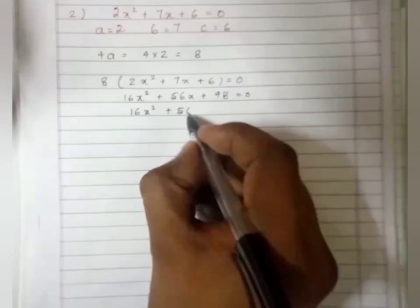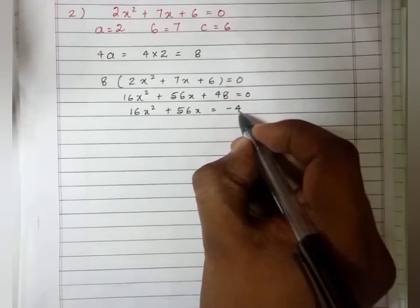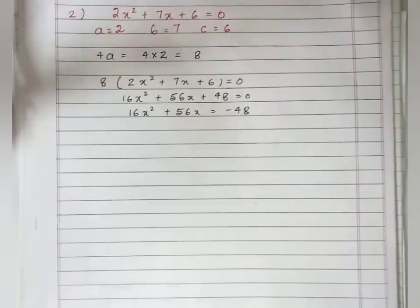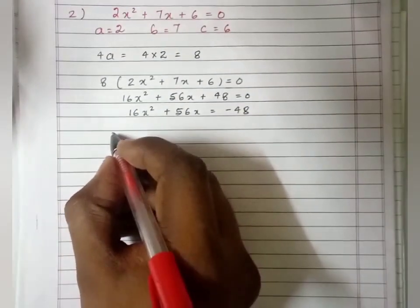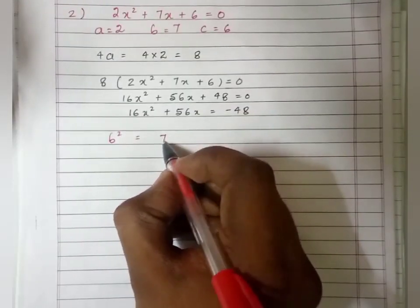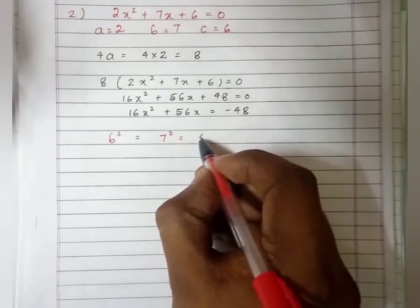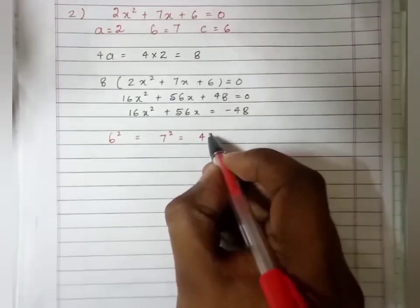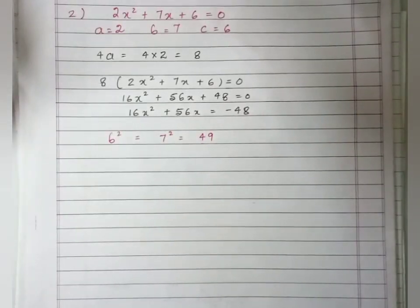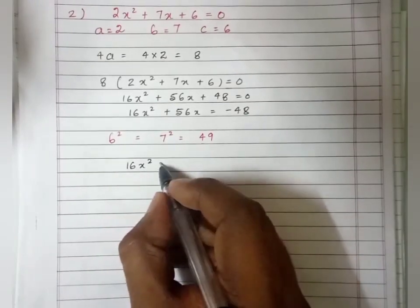Now shift 48 to the RHS to get 16x² + 56x = -48. Now find the value of b²: b = 7, so b² = 7² = 49.